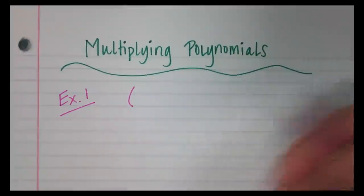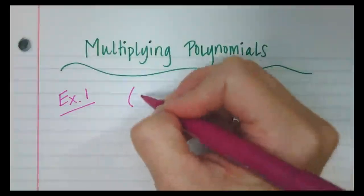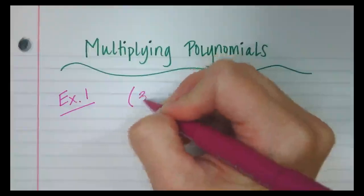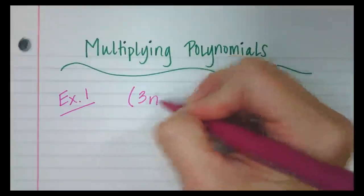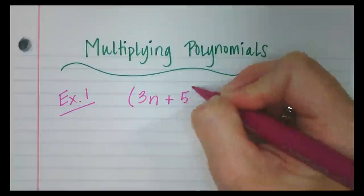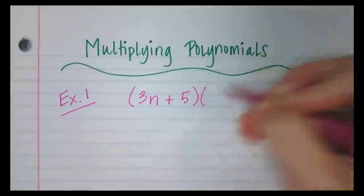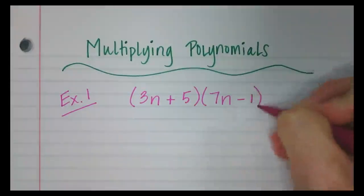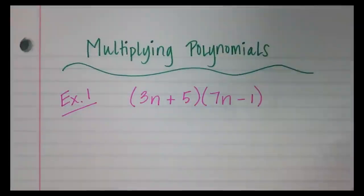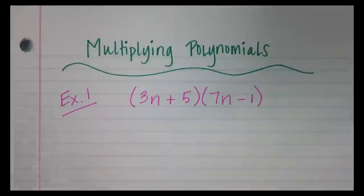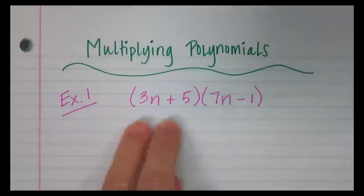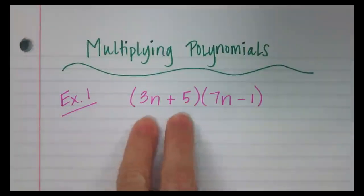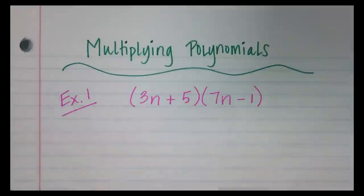For a warm-up, let's do a binomial multiplied with a binomial. How about 3n plus 5 multiplied with 7n minus 1. So what we have learned is that this is going to be the distributive property applied twice because we have a binomial that we're multiplying to a binomial.